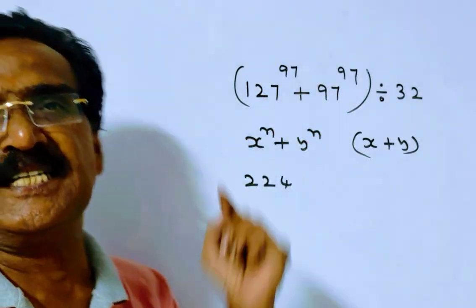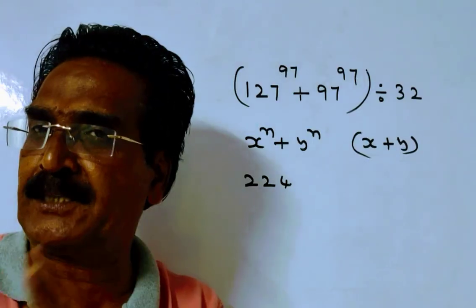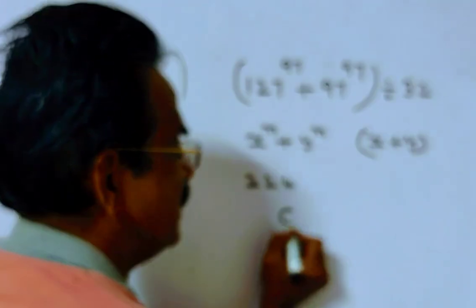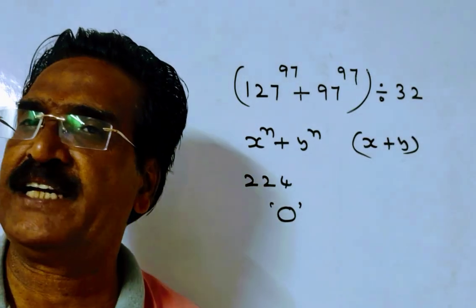So, when this expression is divisible by 32, divided by 32, the remainder is 0 friends. Remainder is 0 friends. Thank you. Have a nice day.